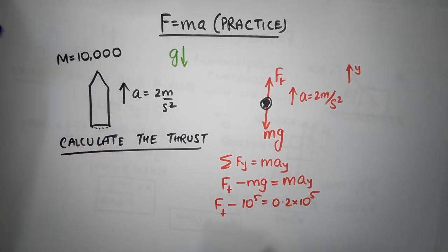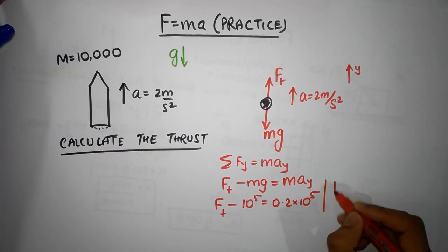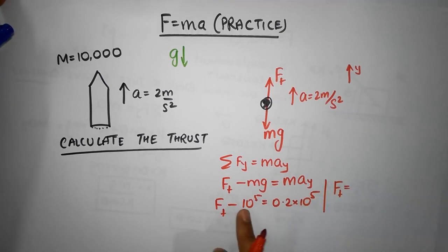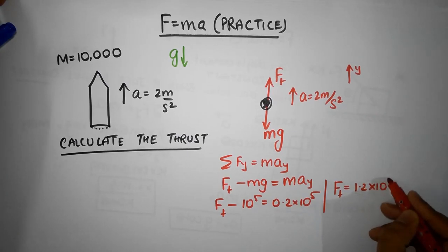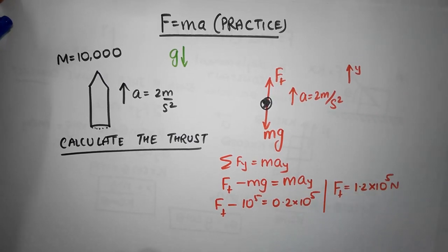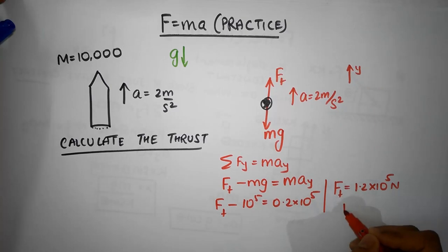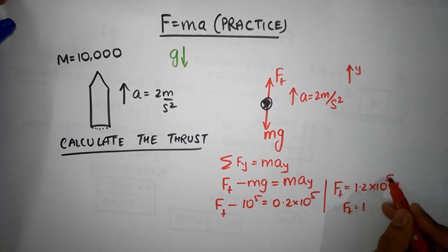I hope you are able to follow this. Therefore the thrust force turns out to be, you bring this to the right, that's 1.2 times 10 to the power of 5, or we can just say it is about 1200, just put two zeros over here, kilonewtons.